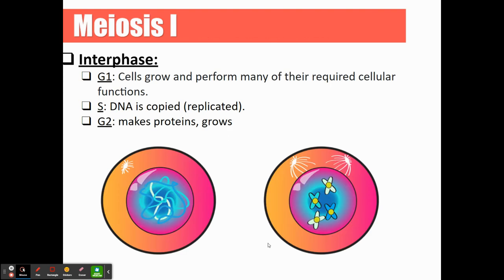If you're following along on your notes, one side talks about meiosis one and the other side talks about meiosis two, so use the headings in the lesson to follow along. Meiosis one is going to start with interphase — this should sound familiar because mitosis also started with interphase, and the steps are the same. We'll see gap one phase, synthesis phase, and gap two phase. During G1, the cells grow and perform normal cell functions. In S phase, DNA replication happens. In G2, the cell continues to grow, making proteins.